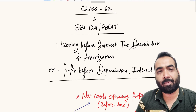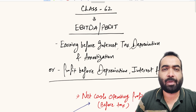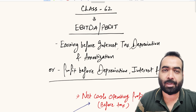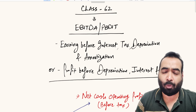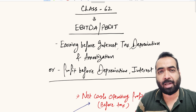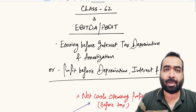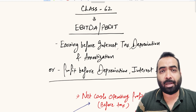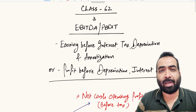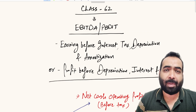Welcome back friends to class number 62. In the previous videos we discussed the concepts of cash profit, operating cash profit, and normal profits. Now it is time to understand the most important concept: what is EBITDA. It is also called PBDIT in some cases, so EBITDA and PBDIT are one and the same thing — just different names for the same thing.